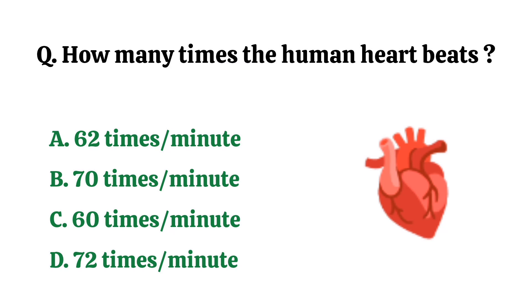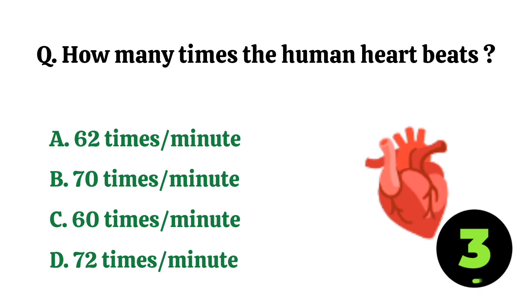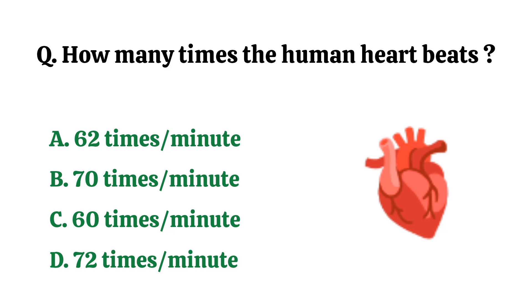How many times does the human heart beat? The correct answer is option D. 72 times per minute.